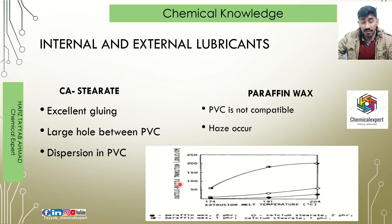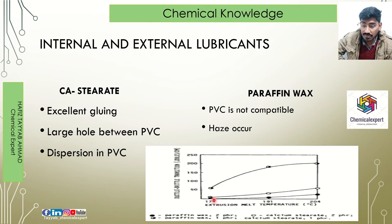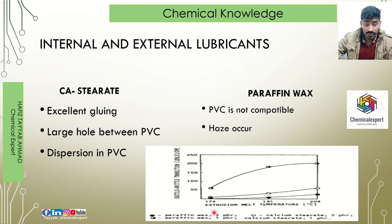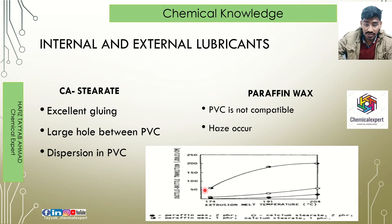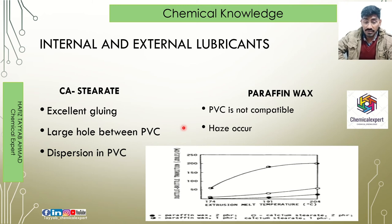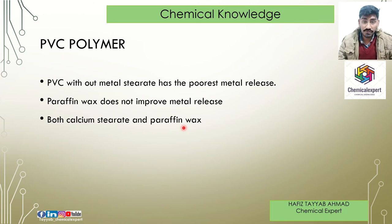On this graph, the y-axis shows ductile-brittle transition and the x-axis shows temperature. When only paraffin wax is added without calcium stearate, the ductile-brittle transition is very low. When only calcium stearate is added, ductility slightly increases. But when a combination of calcium stearate and paraffin wax is added together, the graph shows a significant increase — the ductile ability is greatly improved in polyvinyl chloride.